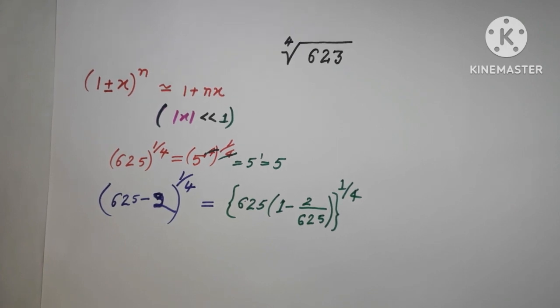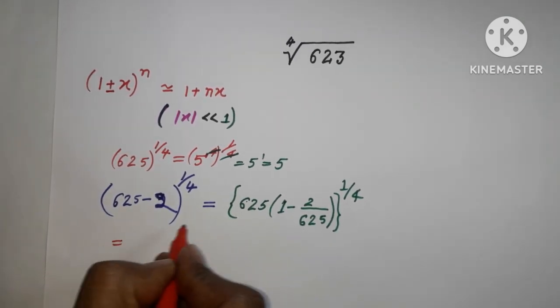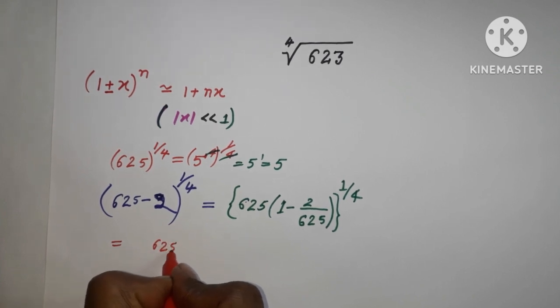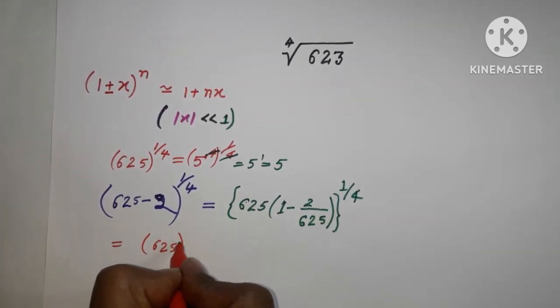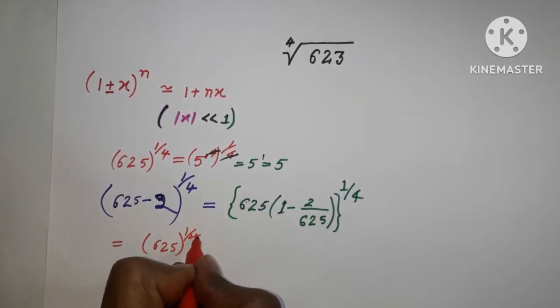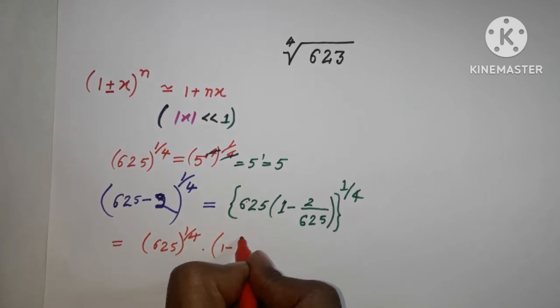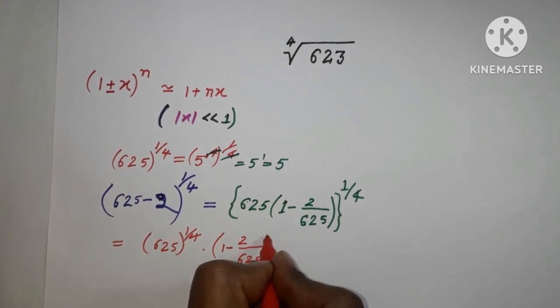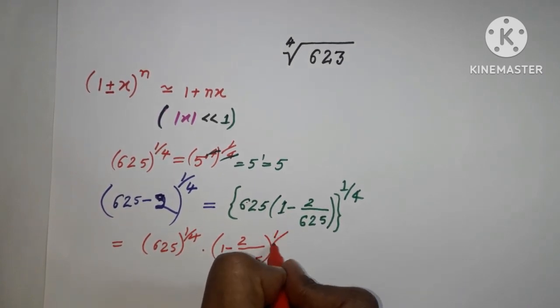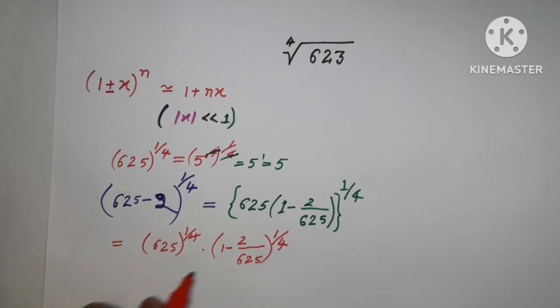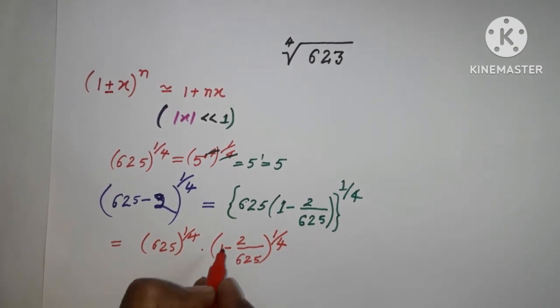It can be written as 625 to the power 1/4, times (1 - 2/625) raised to the power 1/4. In this way we can solve it.